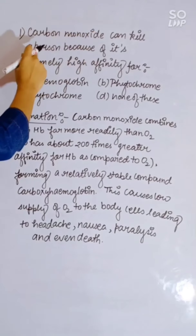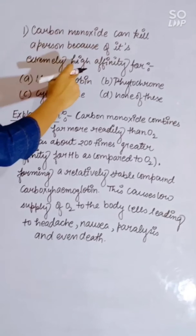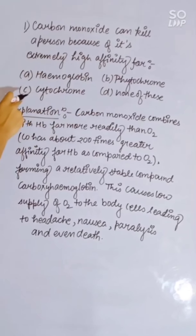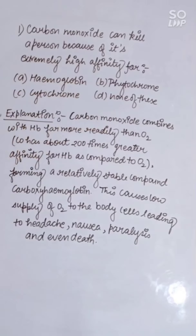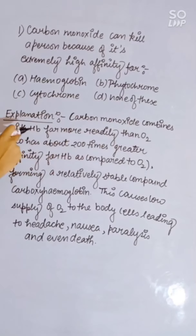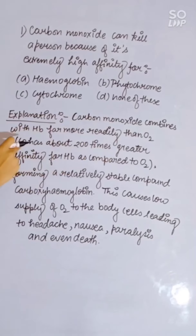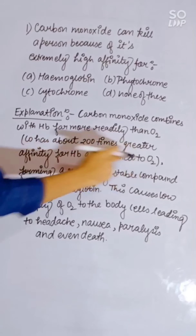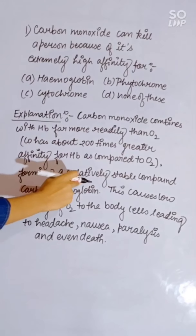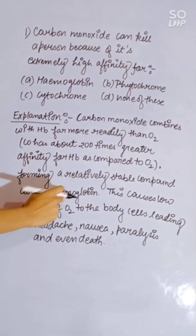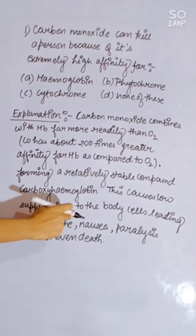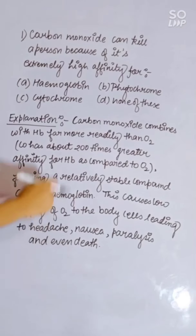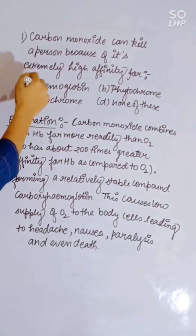Carbon monoxide can kill a person because of its extremely high affinity for: hemoglobin, phytochrome, cytochrome, or none of these. CO combines with hemoglobin about 200 times more readily than O2, forming carboxyhemoglobin, causing low O2 supply leading to headache, nausea, paralysis, and death. Correct answer is hemoglobin.